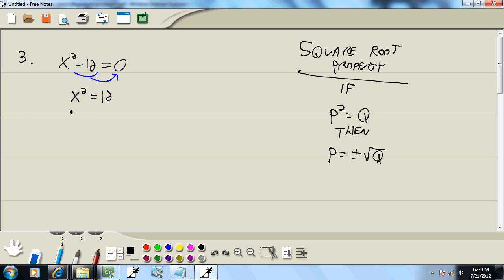Now the entire left side is squared. So we can drop our squared and put a plus or minus square root around the other side.